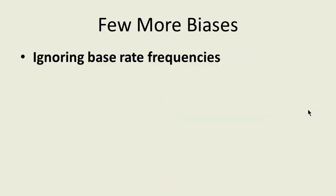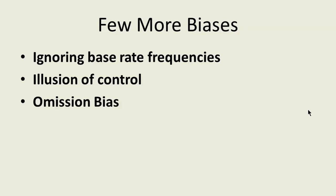Here are a few more biases. Ignoring base rate frequencies: people assess the probability of something occurring without taking sufficient account of the base rate or prior probability of the evidence. Illusion of control: people often believe that they are in control of a situation, although in reality they are not. Omission bias: people have a tendency to judge harmful actions as worse than equally harmful omissions.